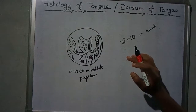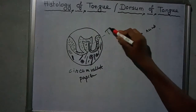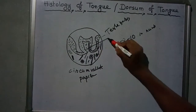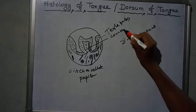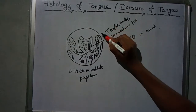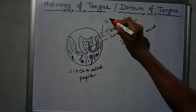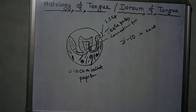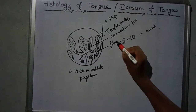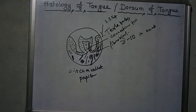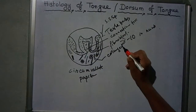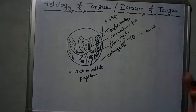The circumvallate papillae contain taste buds and connective tissue. The epithelium is stratified squamous epithelium. The connective tissue contains fibroblasts and collagen fibers. The ducts of small serous glands called von Ebner's glands open into the tongue on the lateral wall.